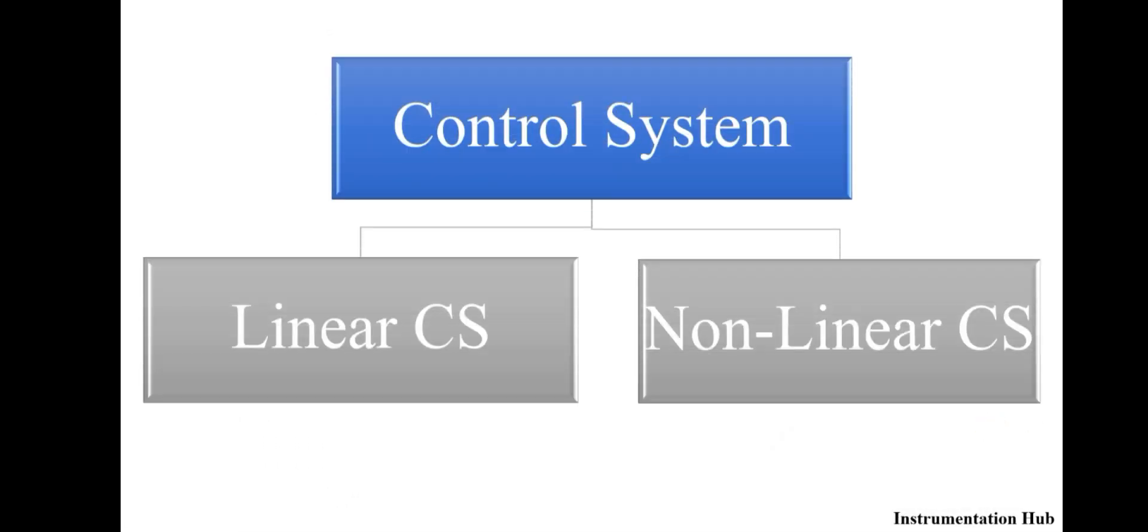Now another type that we have seen is linear control systems and non-linear control systems. If you remember, we have used one term, that is superposition principle. We know that the systems that follow the superposition principle are the linear systems, and the control systems that do not follow the superposition principle are non-linear systems.